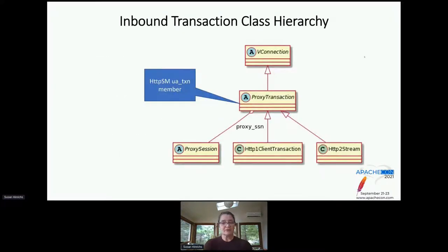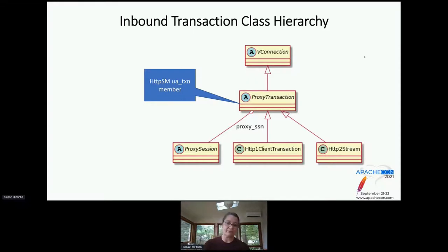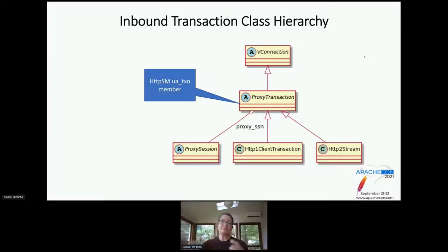Because of the PR and the abstraction layers we added, we were able to move H2 from the plugin into core. This is the class restructuring done to support that abstraction on inbound proxy manipulation. Everything inherits from a VConnection. Our HTTPSM has a UA transaction member which refers to the proxy transaction. The proxy transaction is either an HTTP1 client transaction or an HTTP2 stream as a concrete class. The proxy transaction has a member pointing to the proxy session it's part of. In the newer HTTP3 work, there is an HTTP3 stream or client transaction. Once you have this abstraction, adding another protocol is relatively straightforward.